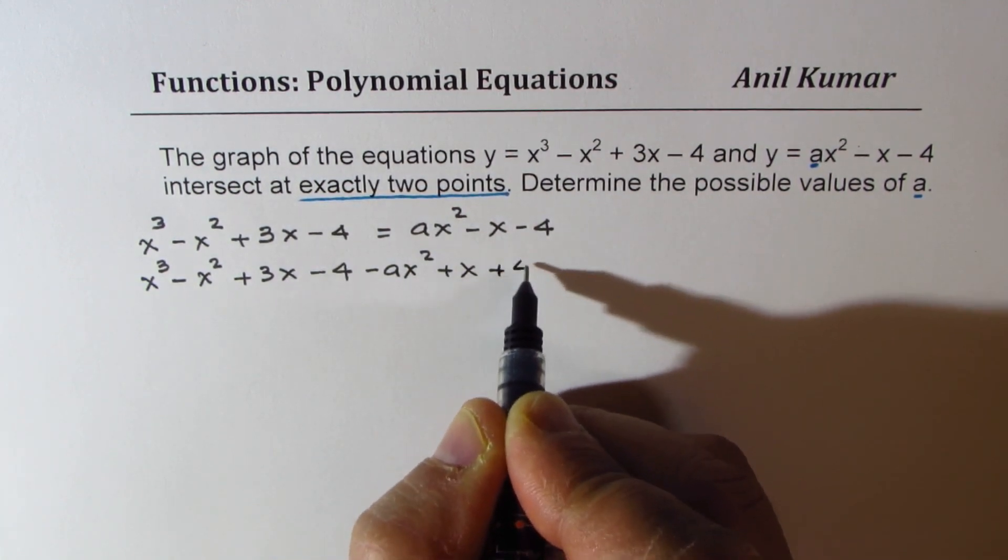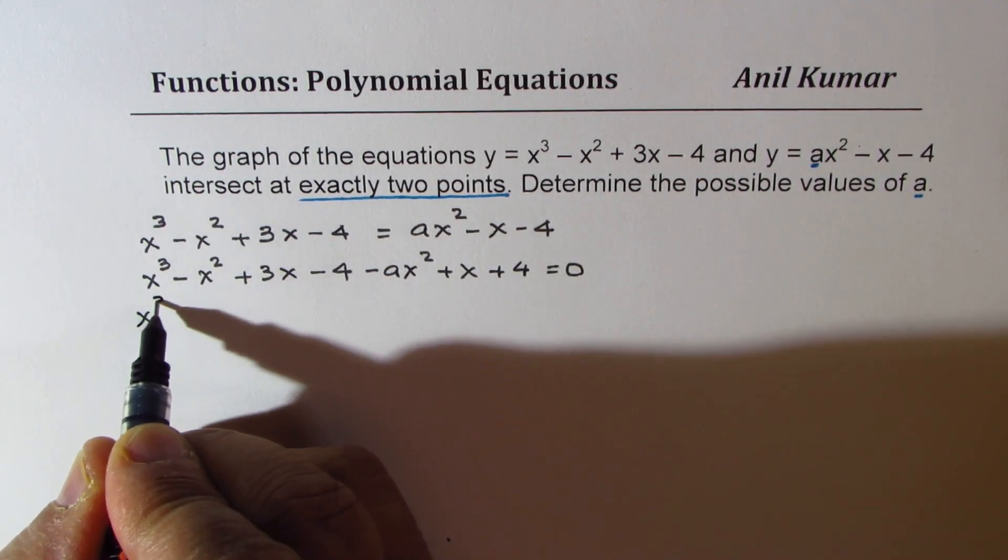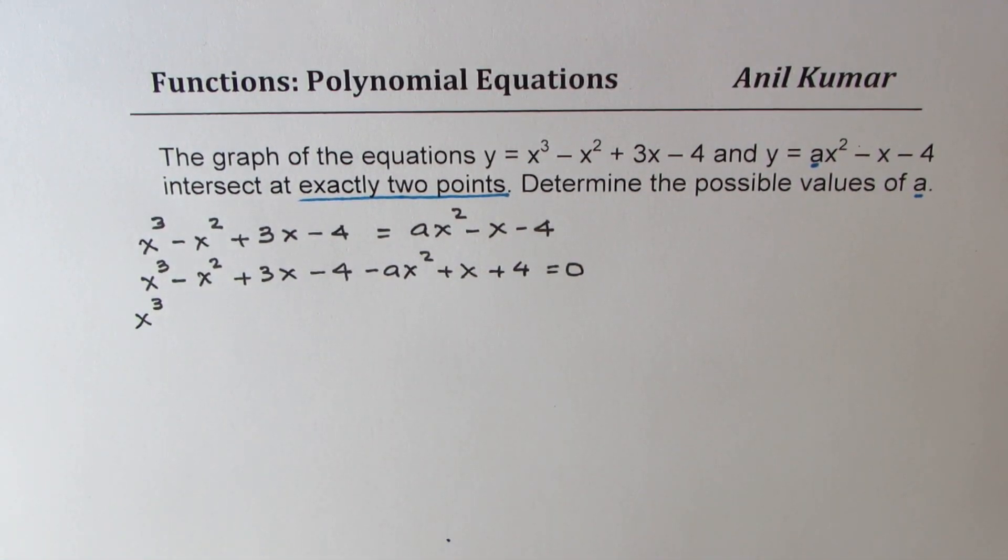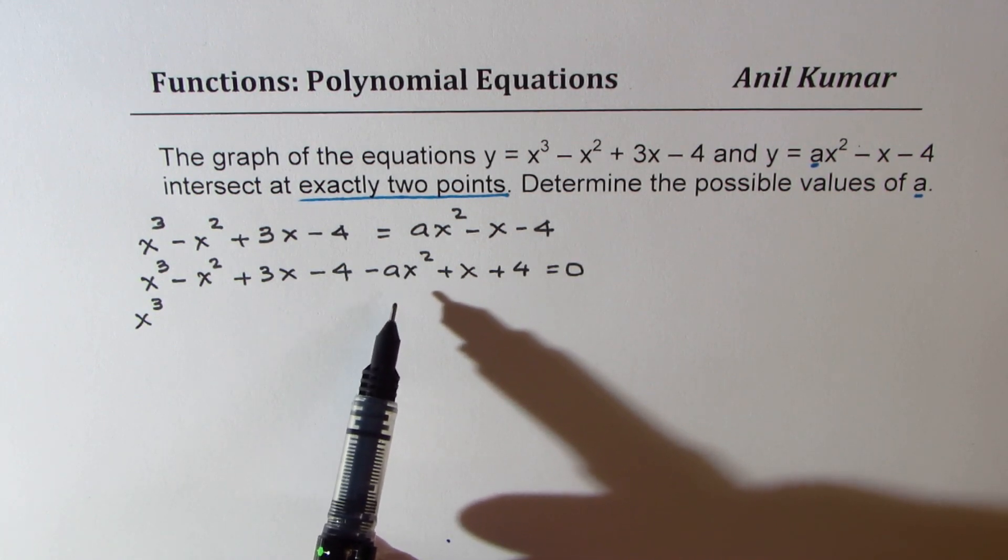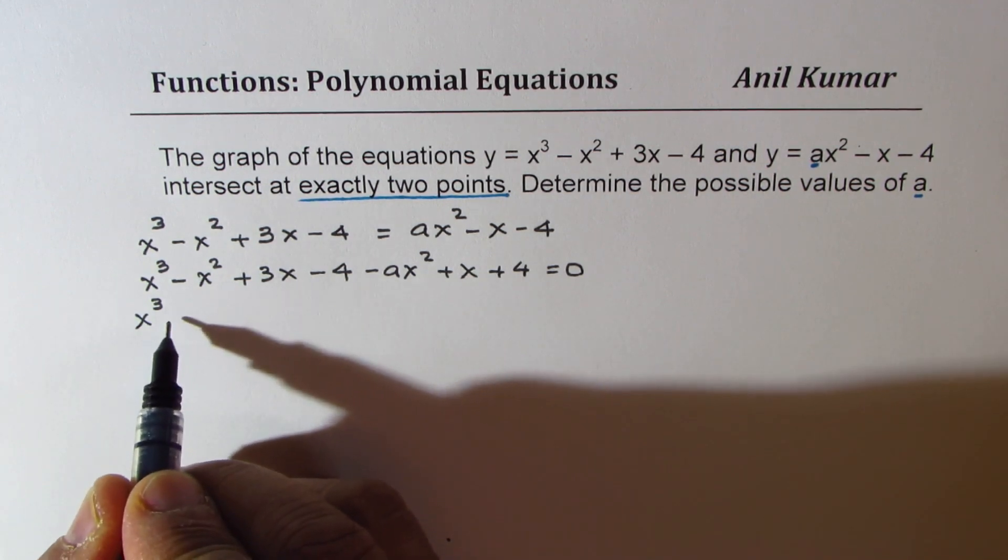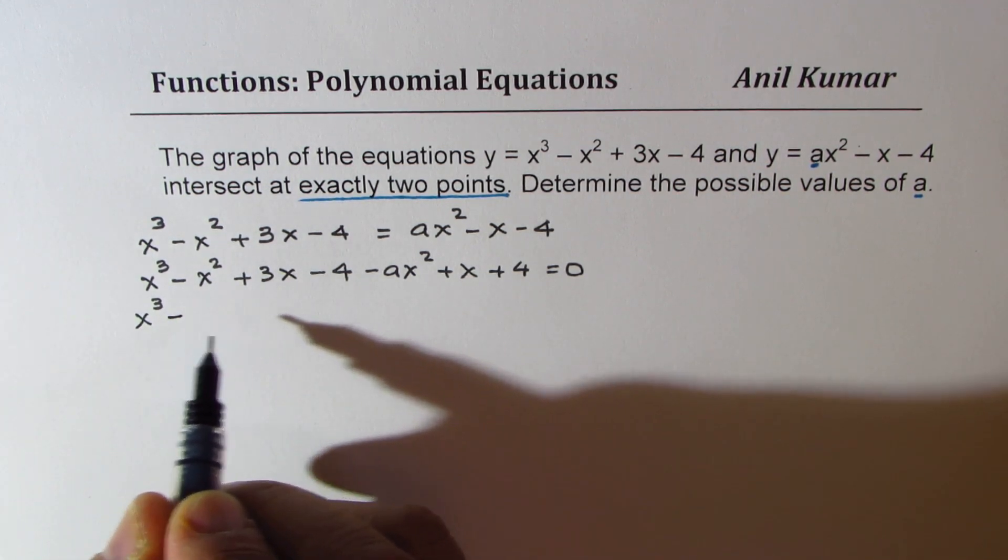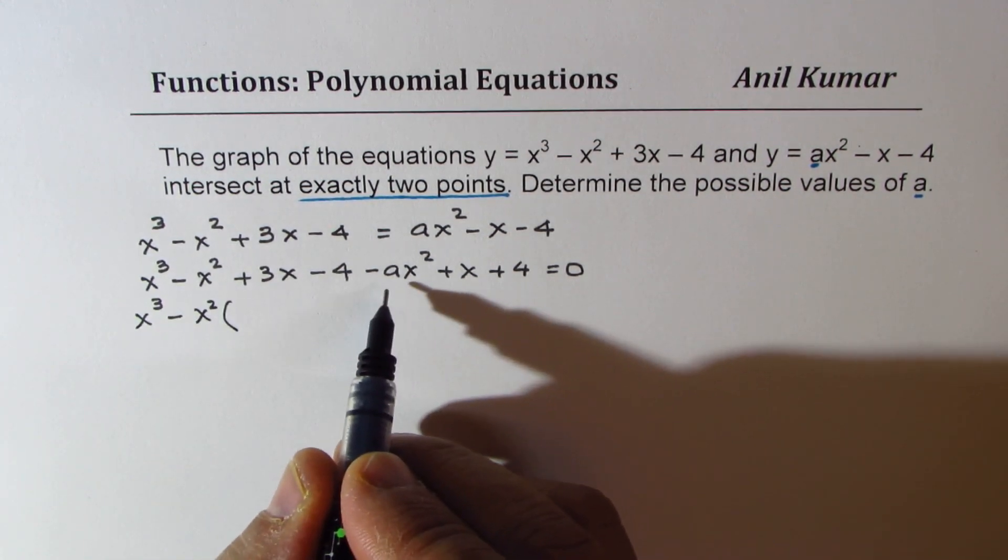So we get x cubed minus x squared plus 3x minus 4 minus ax squared plus x plus 4 equals 0. Combine the like terms. X cubed, now we can take x squared common here.